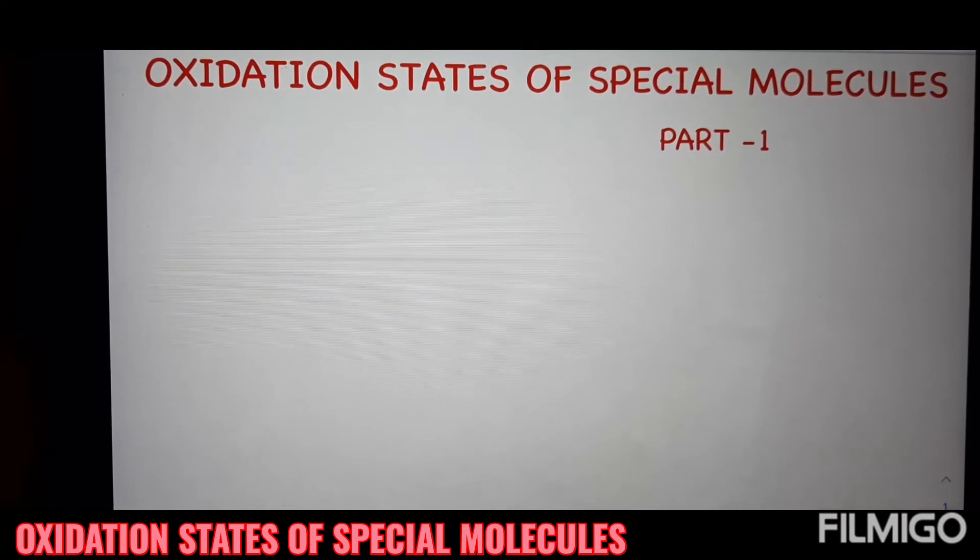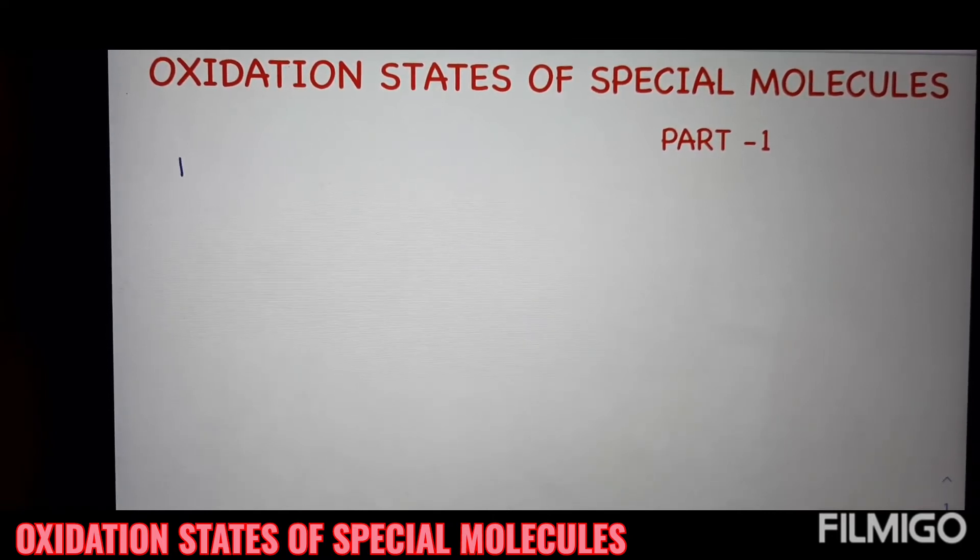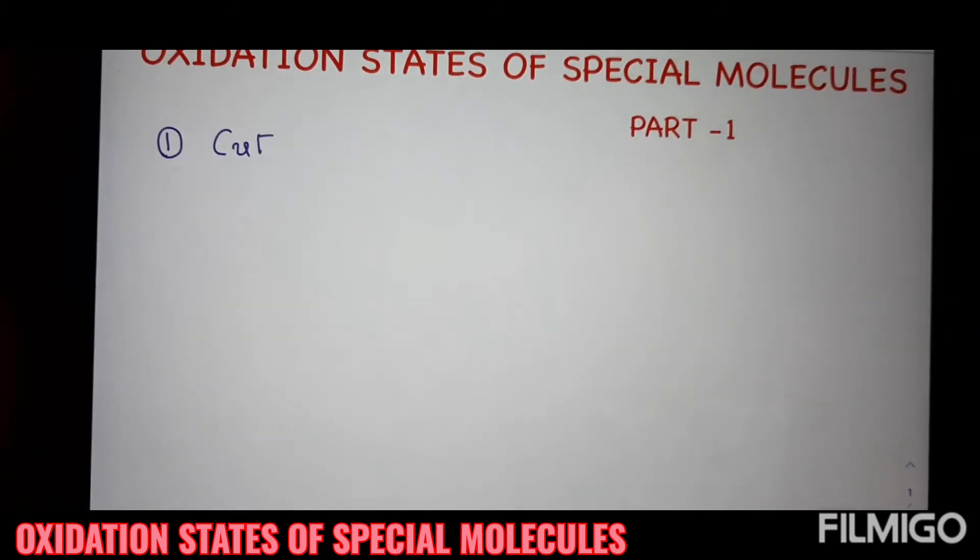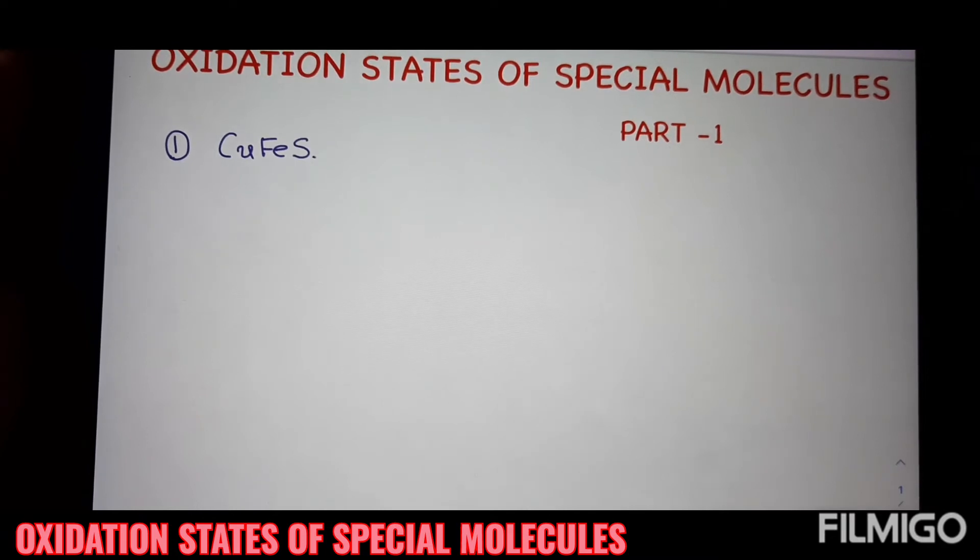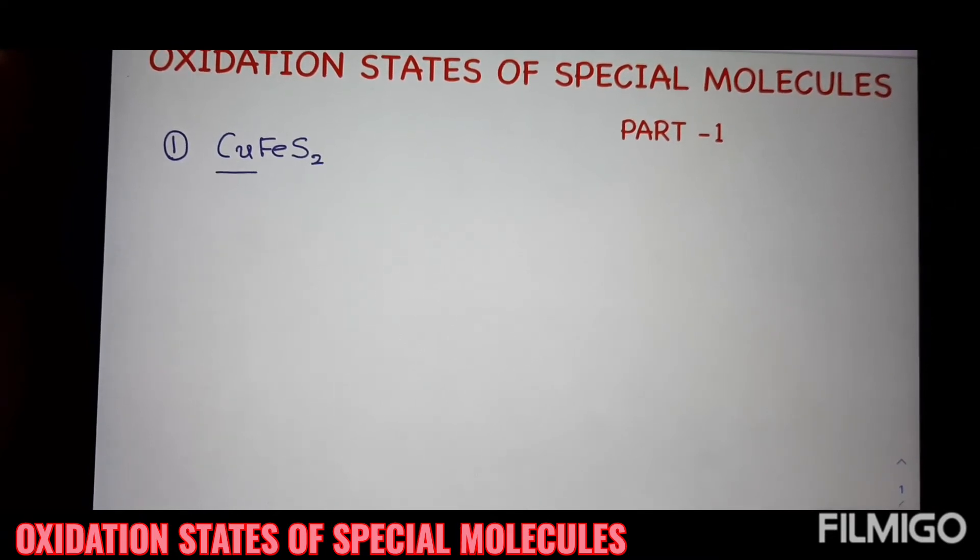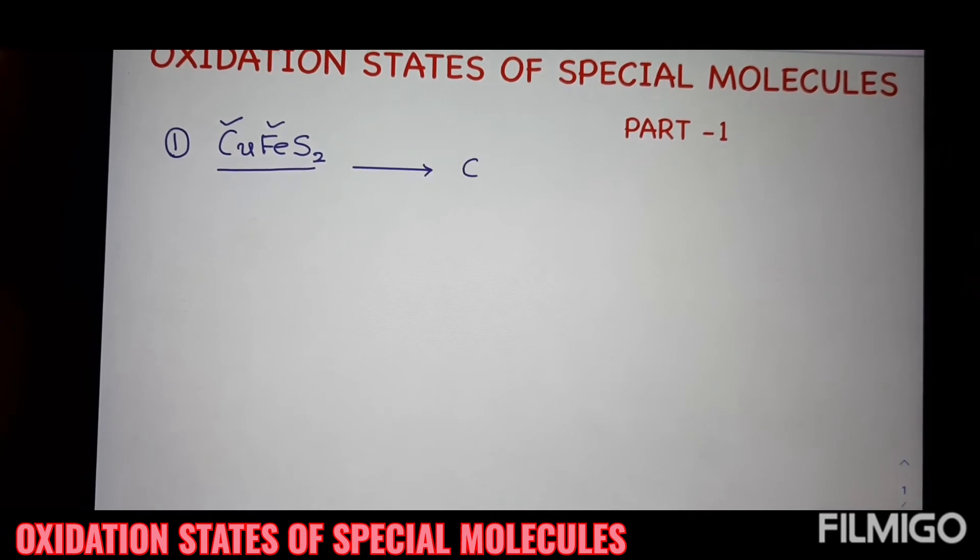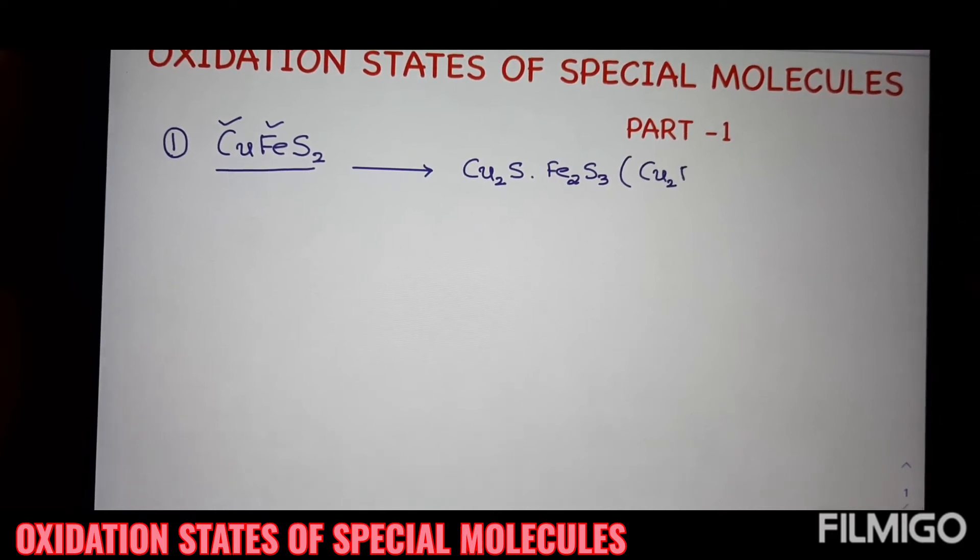That's why I am choosing four molecules in this video. Take the first molecule. Here the first molecule is CuFeS2. In this copper iron sulfide, I want to calculate the oxidation state of copper and iron. For accurate calculation of the oxidation state of copper and iron, you must know the correct molecular formula of this compound. This is the key point for this molecule.